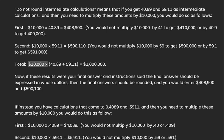Total, $10,000 x 40.89 plus 59.11, equals $1,000,000.